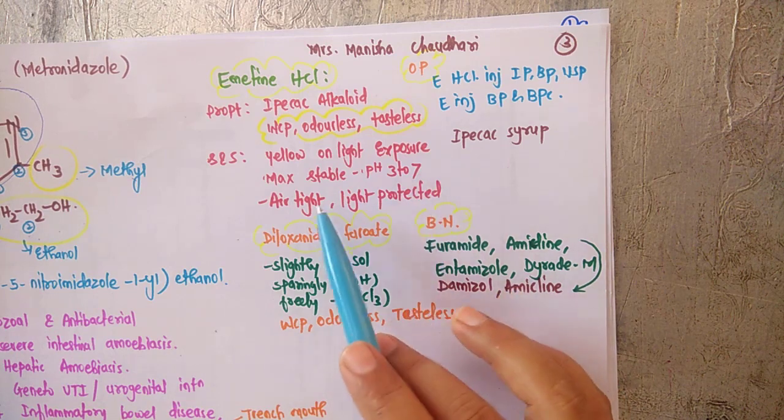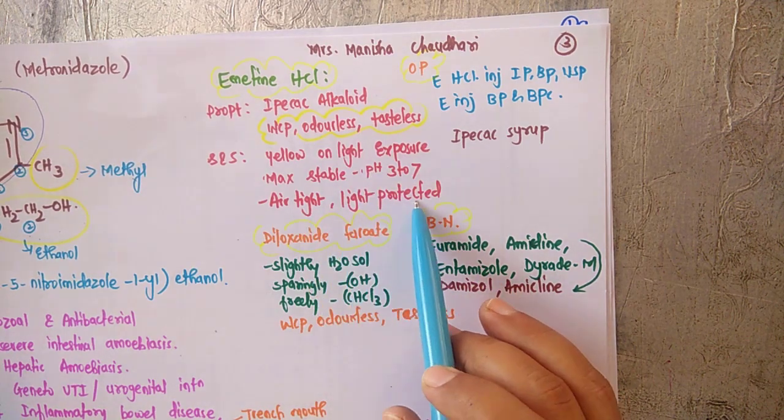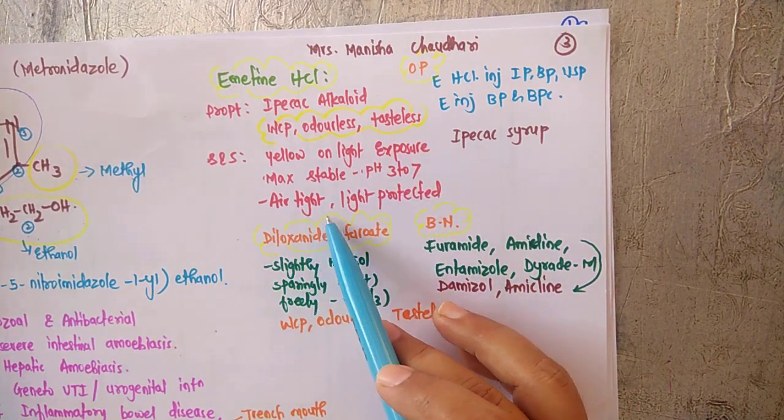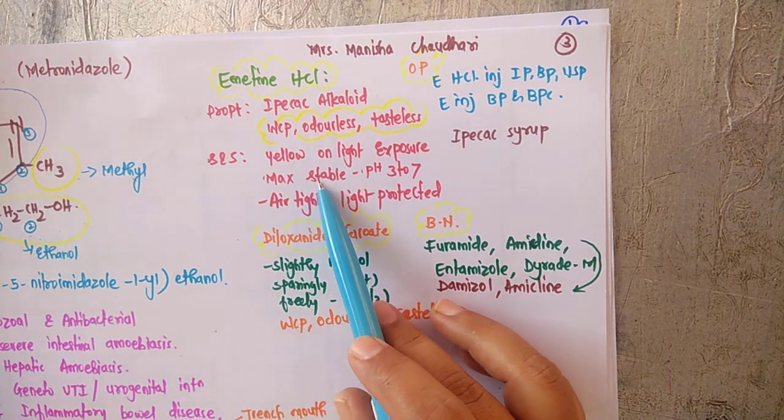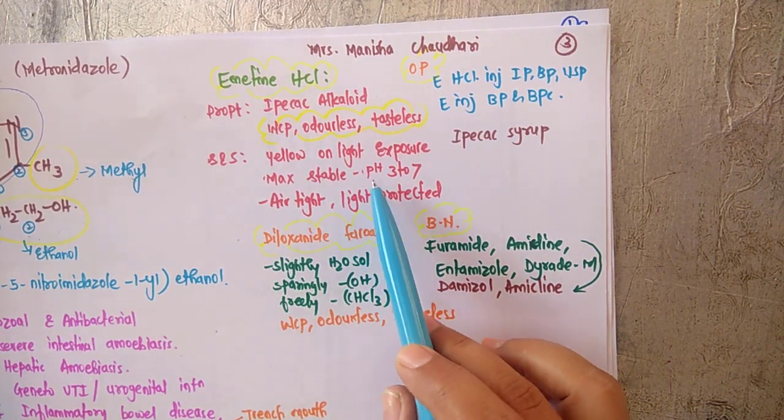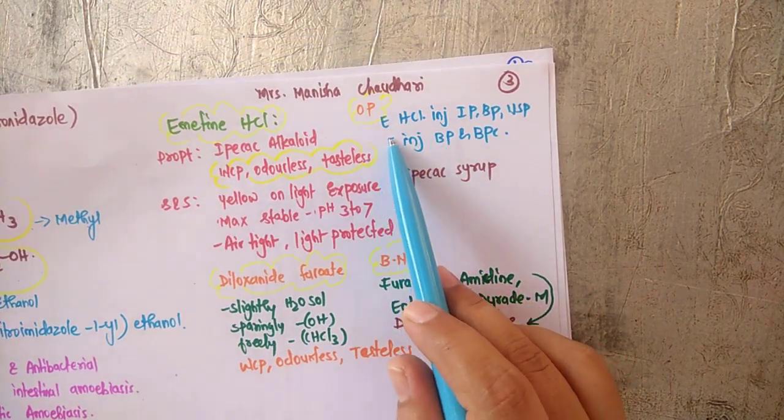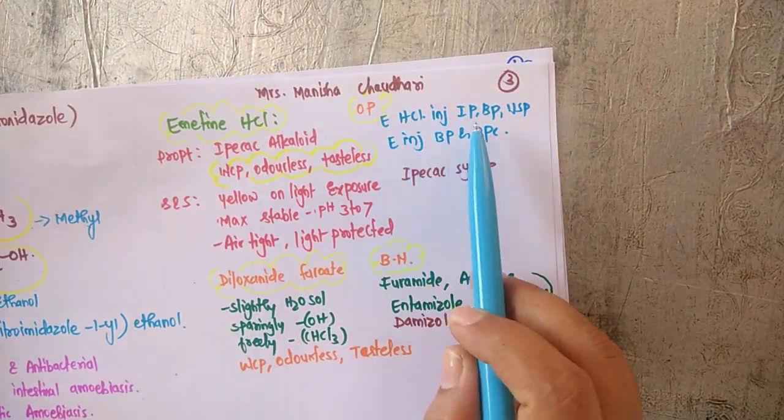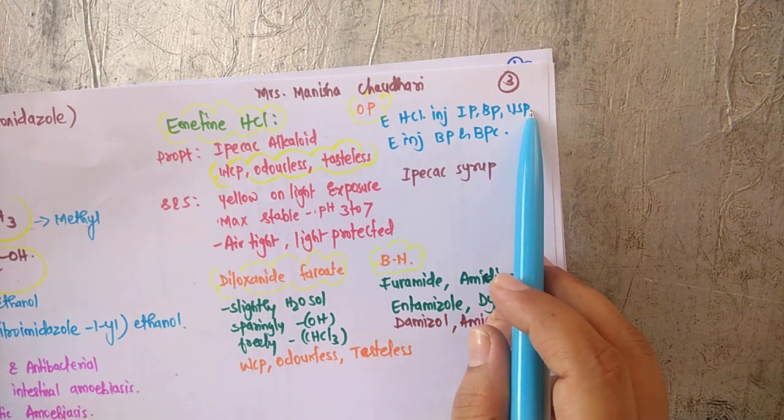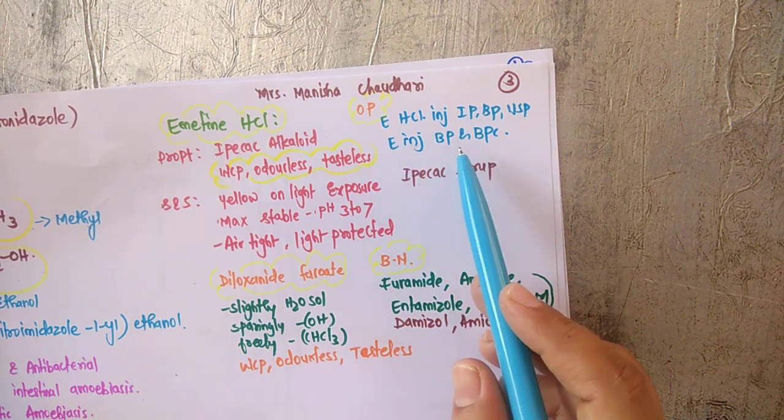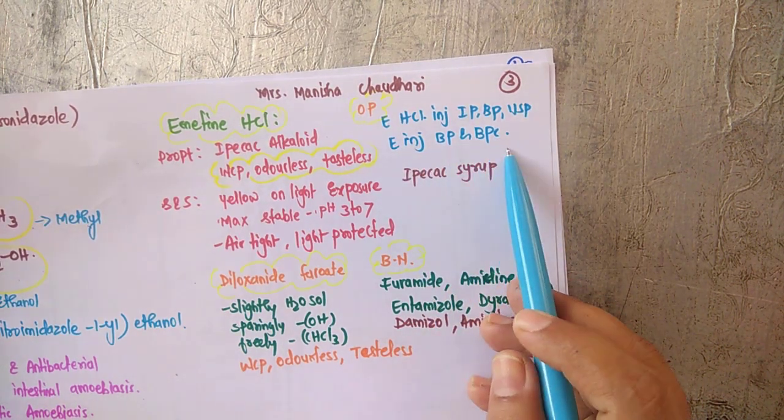Coming towards the stability and storage, it becomes yellow on exposure to light, so it should be stored in light-protected container as well as airtight container, and it shows the maximum stability at pH 3 to 7. Official preparations: emetine hydrochloride injection IP, BP, USP, and emetine injection BP and BPC. Brand name is ipecac syrup.